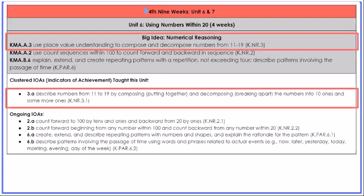The focus of Unit 6 is AKS 3, specifically IOA 3A. AKS 3 sets the stage for building a deep understanding of the base-10 number system by composing and decomposing the numbers 11 through 19. Students develop an understanding of teen numbers as a group of 10 ones and some more ones. This foundational understanding will be extended in first grade when students are formally introduced to place value and unitize the 10 ones as a single 10. Since kindergarten students do not unitize the 10, base-10 blocks are not used. Instead, groupable materials are used so students can see a group of 10 singles or 10 ones.